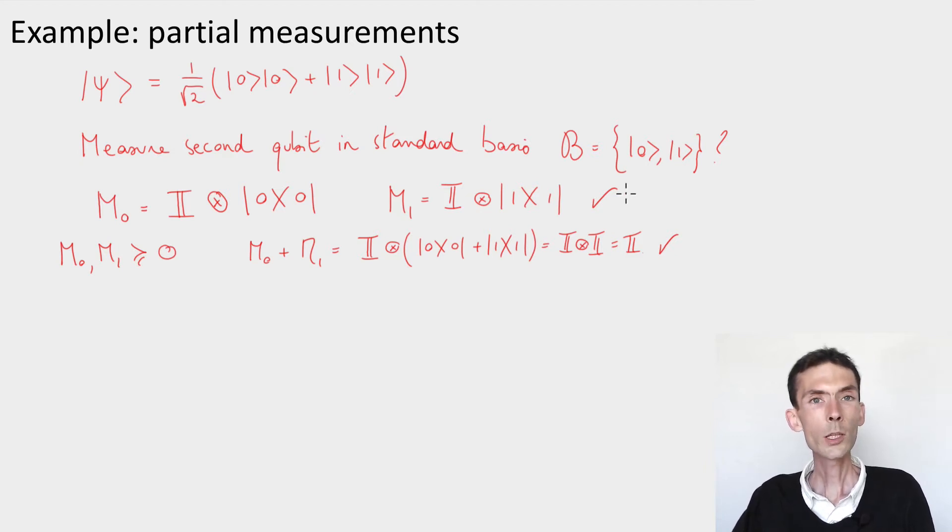Once we have a POVM, we have everything we need in order to describe the probabilities. We don't have everything we need in order to describe the post-measurement states. I also need to give you a Kraus operator decomposition of my POVM. Now, it turns out that when the POVM is given by projectors, the matrices M₀, M₁, et cetera, are projector matrices, meaning that they're Hermitian and they square to identity, then it's always the case that you can, if you want, choose as Kraus operators the same operators as the M themselves.